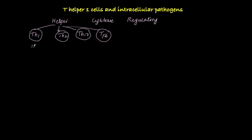TH1 cells produce interferon gamma — that's the signature cytokine, and it determines what function these TH1 cells are going to perform. TH2 cells produce IL-4, IL-5, and IL-13. TH17s produce IL-17 and IL-22, and T follicular helper T cells produce IL-21 and interferon gamma or IL-4. So on the basis of these signature cytokines, the functions of these helper cells are determined.